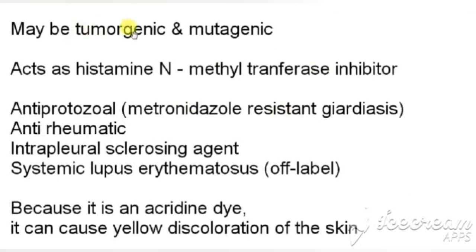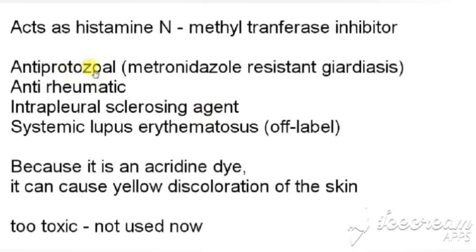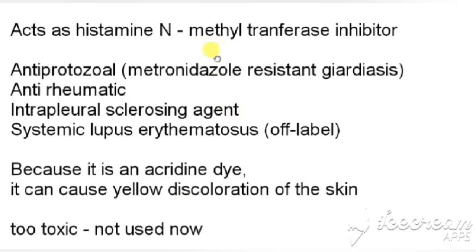Mepacrine may be tumorigenic and mutagenic, and it acts as a histamine N-methyltransferase inhibitor. It is used as an anti-protozoal agent — active against metronidazole-resistant Giardia — and as an anti-rheumatic and intrapleural sclerosing agent, and used in systemic lupus erythematosus as an off-label medication. Because of the acridine nucleus, it can cause yellow discoloration of the skin. It is too toxic, which is why it is not used now.